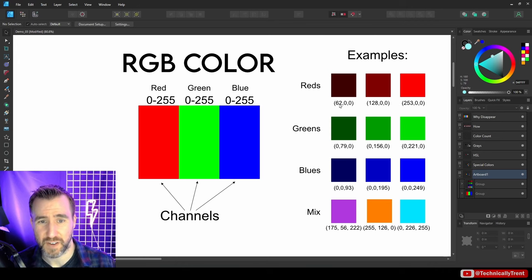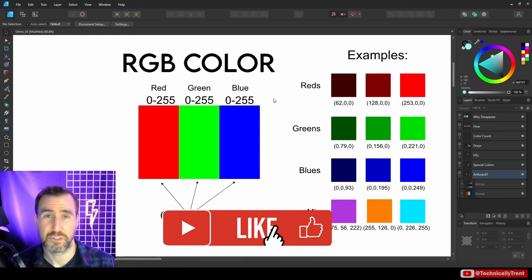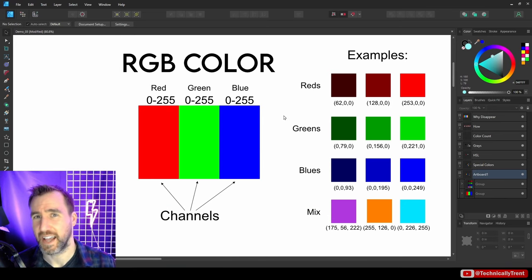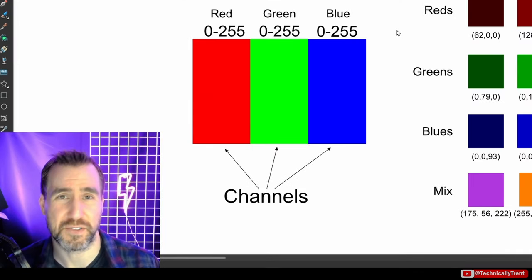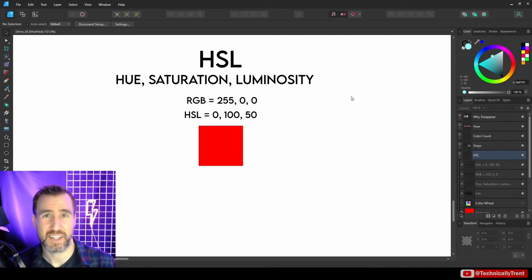Here are some examples of colors. If I keep everything zero but modify just the first number, that gives different shades of red. Same thing with the second number for greens, and the third number for blues. At the bottom, mixing different combinations of numbers gives other colors. In addition to red, green, and blue channels, there's also an alpha channel — so sometimes you'll see RGBA mentioned, where the A stands for alpha transparency — but I'll ignore transparency for this video.